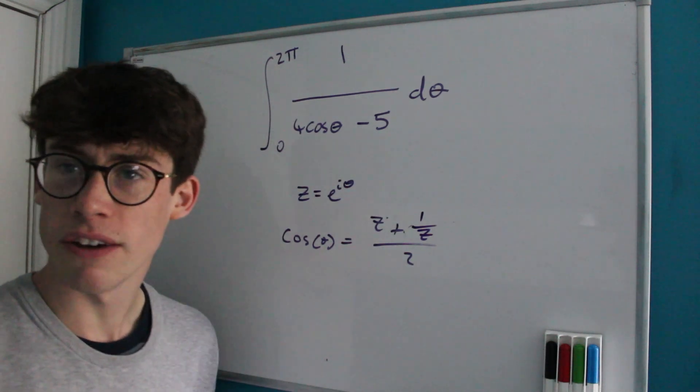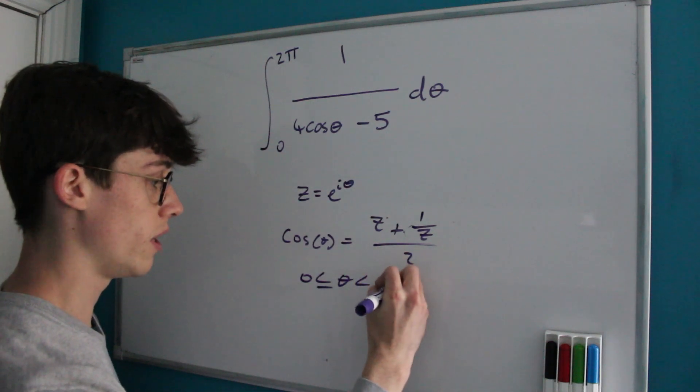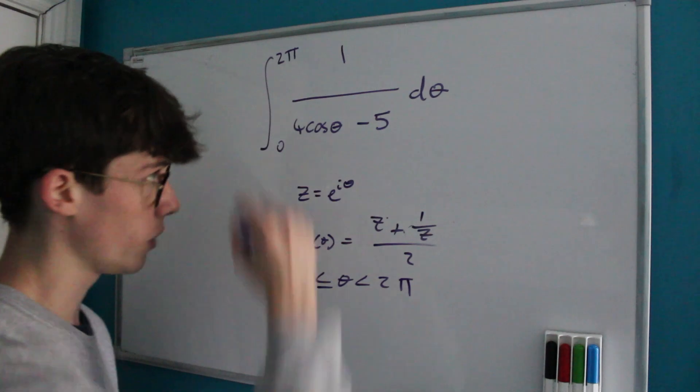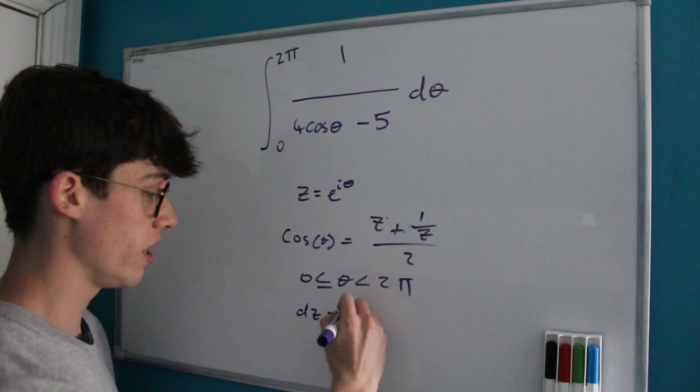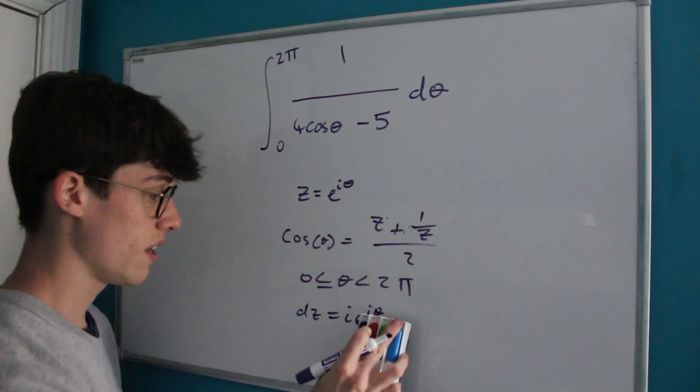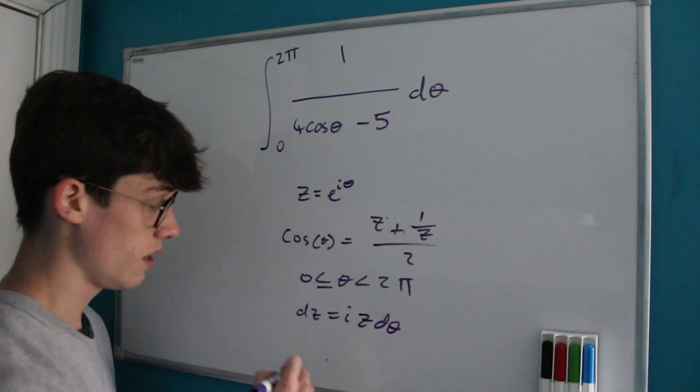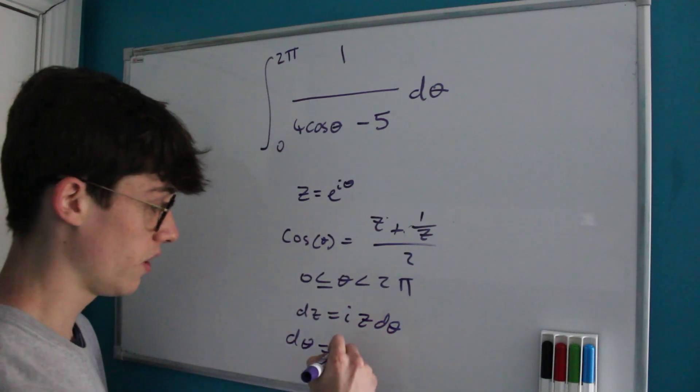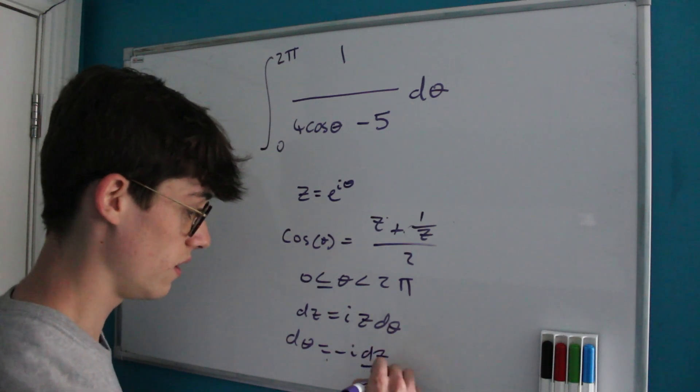And now all that we have to do, given that of course we're going from 0 to 2π, is consider what dz is so we can make our swap for dθ. Well, dz is equal to i e to the iθ and e to the iθ is z. So dz is equal to iz dθ, which means that dθ, if we just multiply by negative i on both sides and divide by z is equal to negative i dz over z.